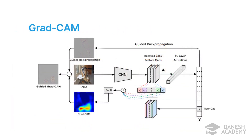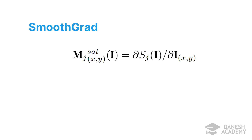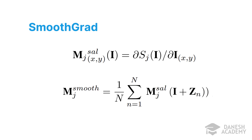While CAM laid the groundwork for WSSS, Grad-CAM improved upon it by offering better localization and broader applicability across different CNN architectures. Unlike CAM, Grad-CAM is compatible with CNN models that do not have a global average pooling layer at the end. Another well-known model is SmoothGrad, which aims to identify pixels that significantly influence the final decision of a deep neural network. It adds noise to the input image and averages the gradients of the class score function with respect to the input, producing visually sharper sensitivity maps and better segmentation results.